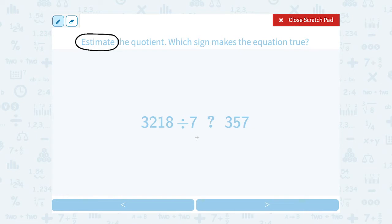Since I'm dividing it by 7, I want to think about numbers that 7 goes into. So I know 7 times 3 is 21, 7 times 4 is 28, and 7 times 5 is 35.